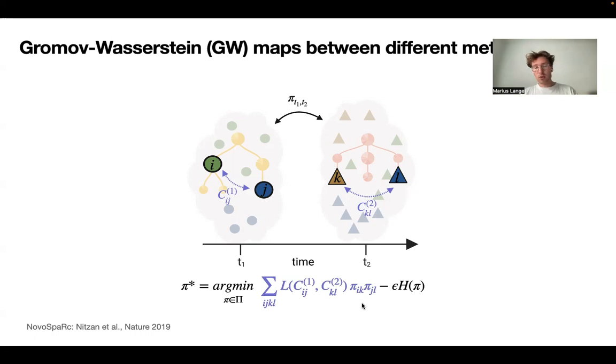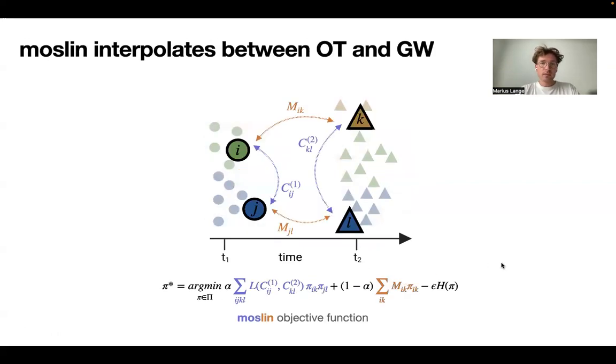So you're saying, on average, for most cells, a pair of cells that has a certain lineage distance at the early time point is more likely to be mapped to a corresponding pair of cells at the later time point that has a similar lineage distance compared to a pair of cells that has a very different lineage distance at the second time point. And this doesn't have to hold for every single pair of cells. You just enforce this on average.